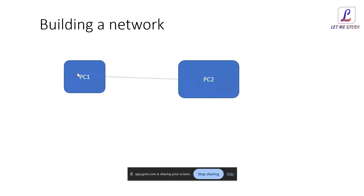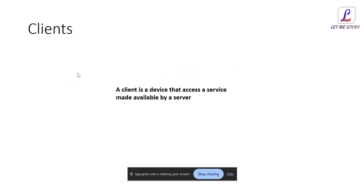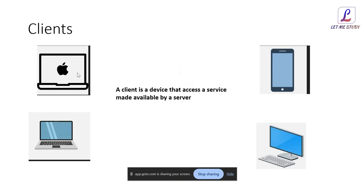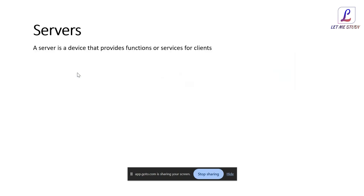We'll cover the detailed step-by-step process of how IP addresses are attached later. Now, consider a switch scenario: when PC1, PC2, and PC3 are all connected to the same switch, instead of connecting each PC with a dedicated cable — which would be very tedious and not scalable — we connect them all through one switch.